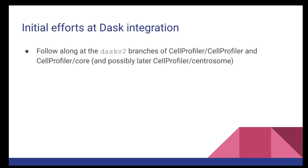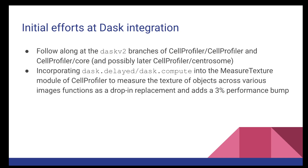I don't have a ton of results to tell you yet, but you can follow along yourself at the Dask V2 branches of CellProfiler and of CellProfiler Core. We've come up with a couple of different toy examples of ways we might integrate Dask. One of them is taking our measure texture module — where we want to make a measurement in many different objects — and taking advantage of Dask Delayed and Dask Compute to scatter that computation really easily. It functions as a drop-in replacement of our existing functionality by just adding in these two Dask options, and we get a 3% performance bump, which is not anything to sneeze about for something that can be dropped in in just a few minutes.